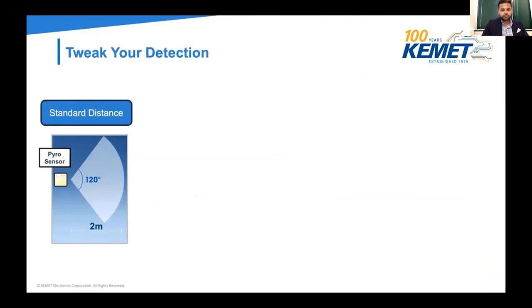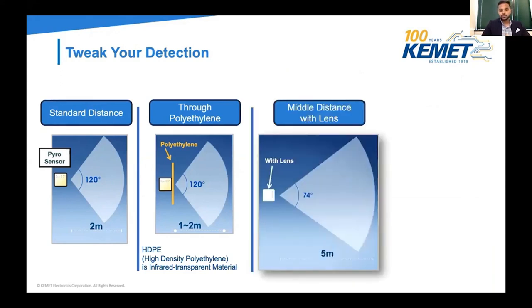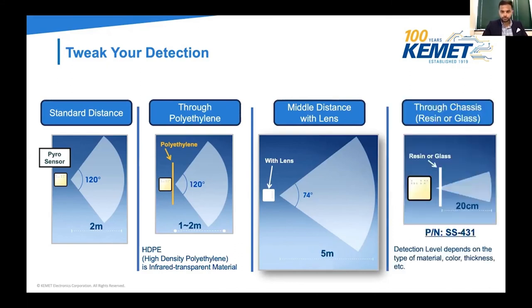There are a couple of ways to tweak the detection of the pyro sensor. Our standard detection distance is two meters. It can also detect through polyethylene material, which reduces the range to about one to two meters. We can add a lens to the pyro sensor — a lens is not required, but if you add one, you can increase the range to about five meters. We also have a pyro sensor that can detect through resin or glass material, mostly used for short distance sensing at about 20 centimeters.